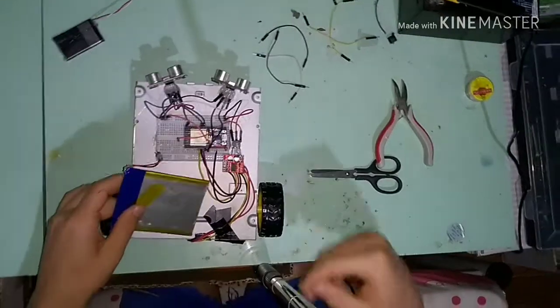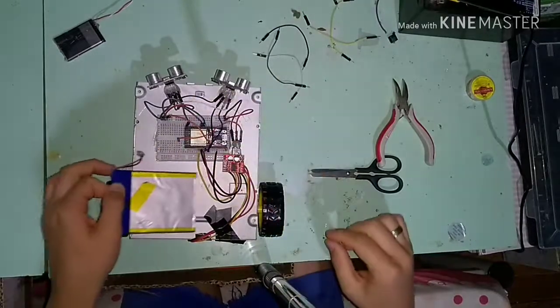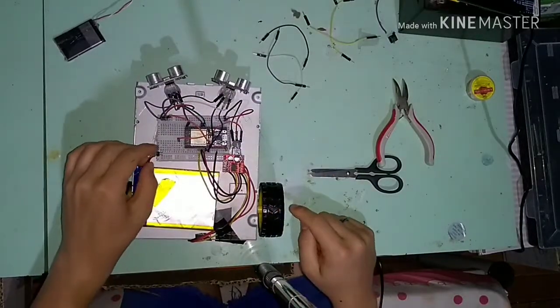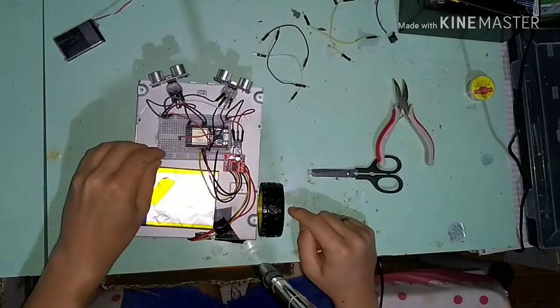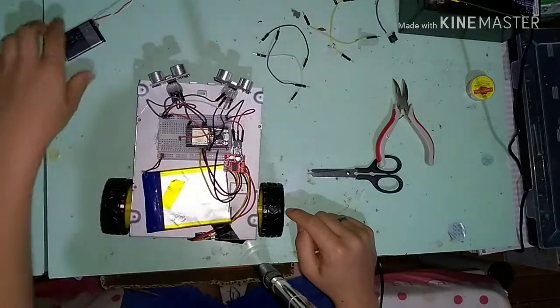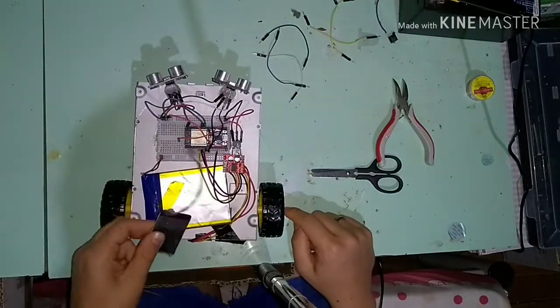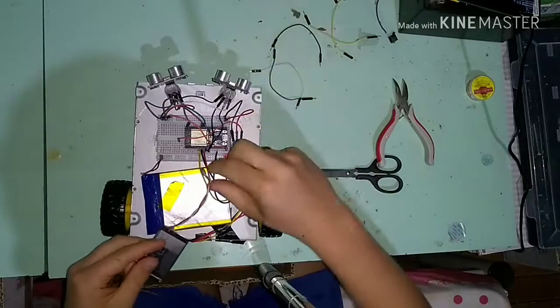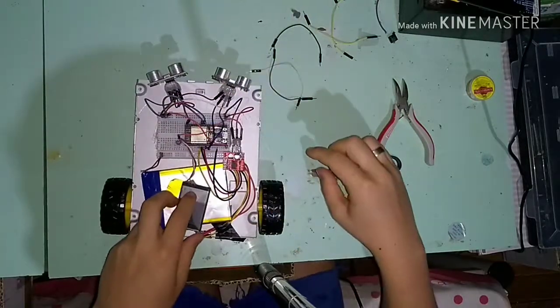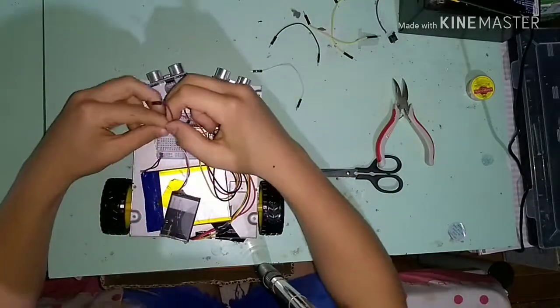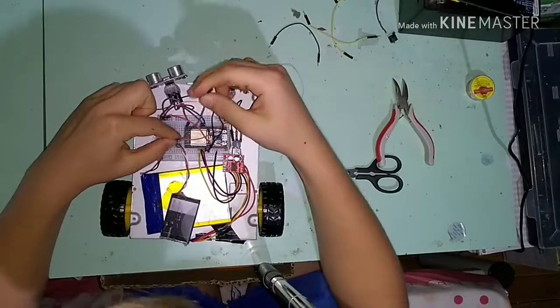Aí peguei uma bateria, essa de 3.7V de 2.5A, e coloquemos ela na trilha positiva e negativa ali da ponte H. Eu tô usando só 3.7V pra limitar os motores. Se eu usasse as duas em série, ia dar demais, muito ligeiro.